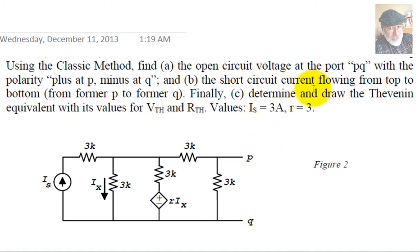And B, the short circuit current flowing from top to bottom, from former P to former Q in a short circuit from P to Q. Finally, C, determine and draw the Thevenin equivalent with its values for V Thevenin and R Thevenin.